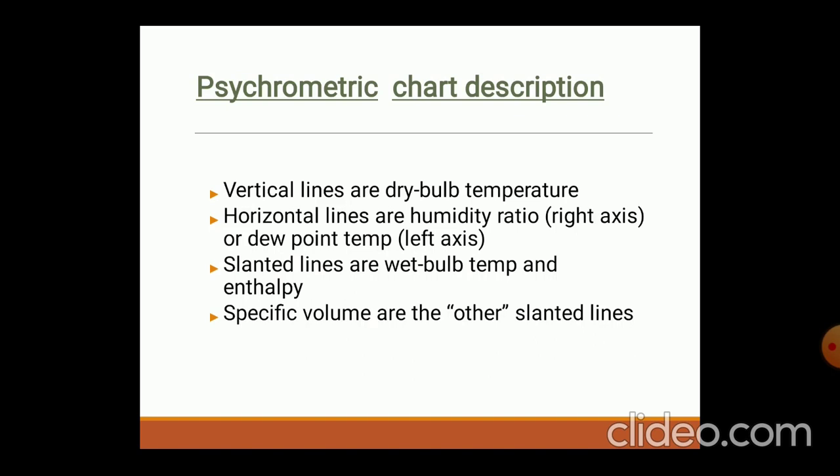The psychrometric chart is the graphical representation of various properties of water at all phases. For study purposes we can take these values for calculation, both analytical and graphical. This is the psychrometric chart description.